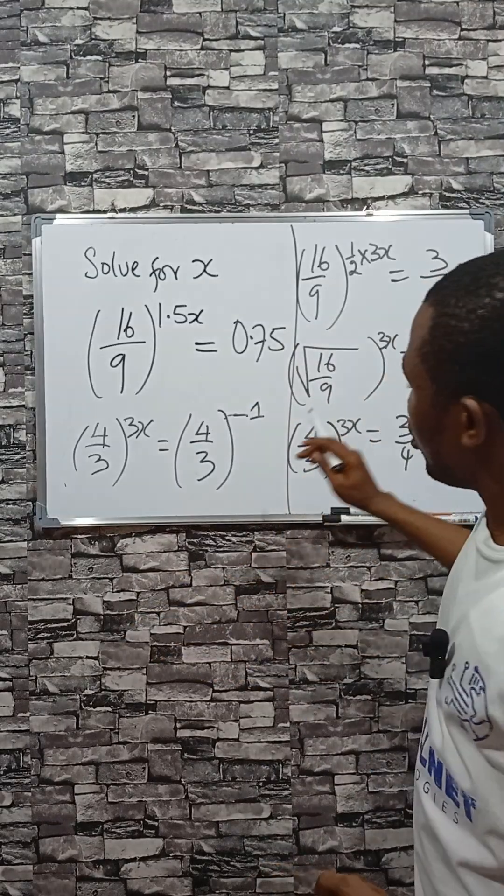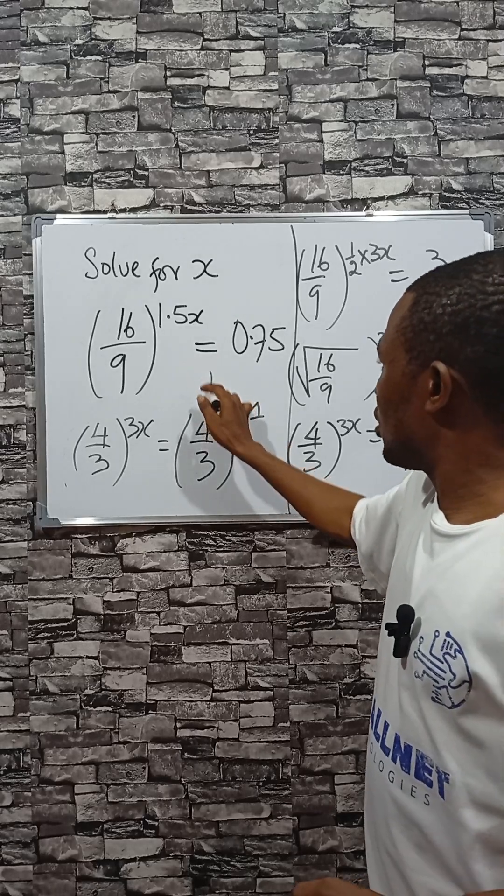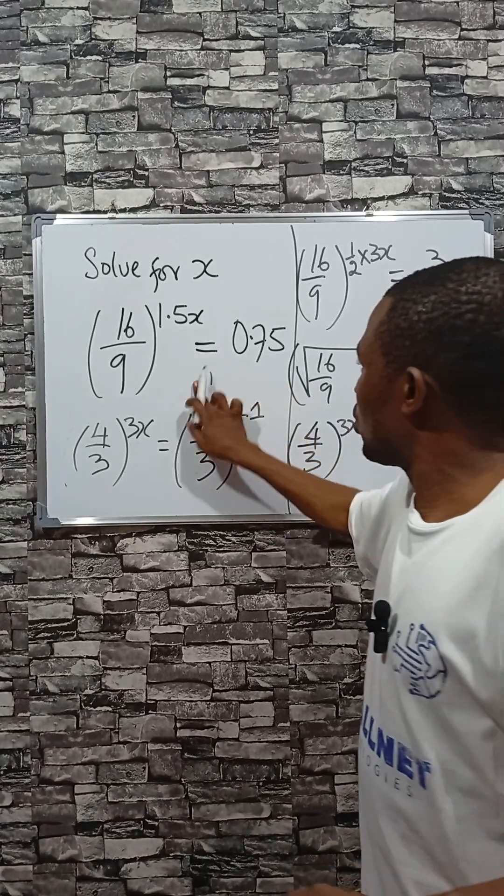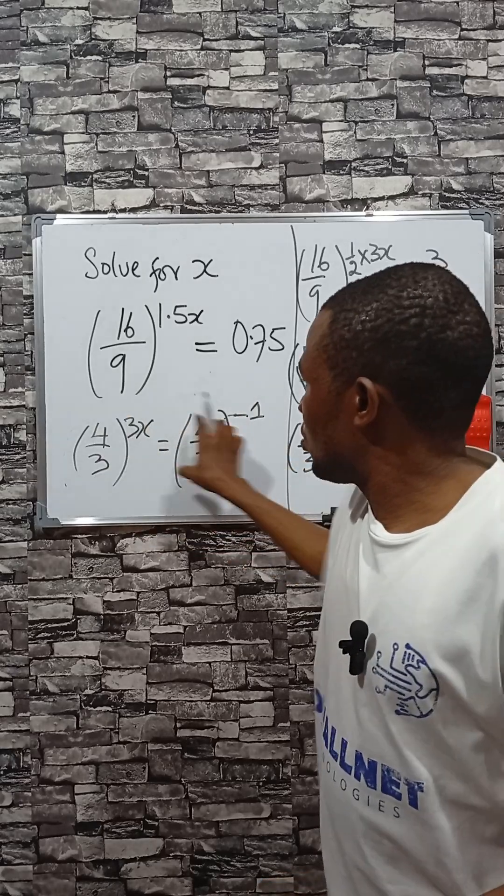Because if I want to remove this -1, I will divide it by 1, and this will take 3 up. So now they have the same base. Now you can equate the powers.